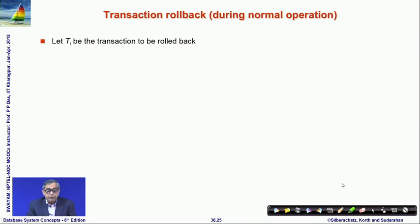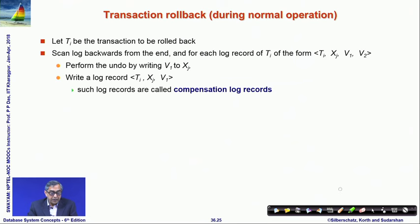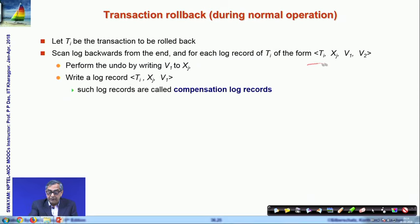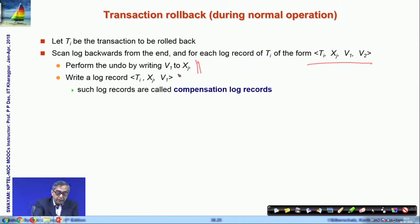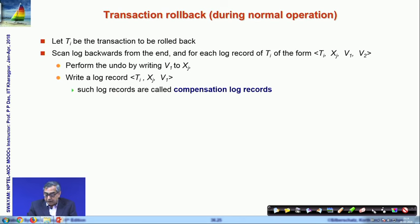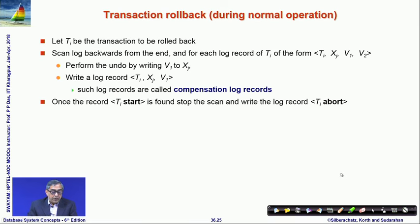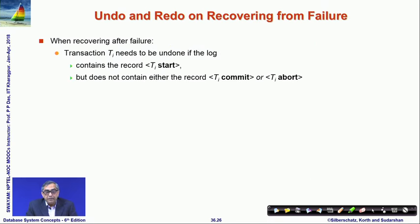When rolling back a transaction Ti during normal operation, scan the log records from the end. For each update log record of Ti, restore the old value and write a compensation log record [Ti, X, V1]. Continue backwards until the [Ti start] log record is encountered, then write [Ti abort] to indicate the undo is complete.